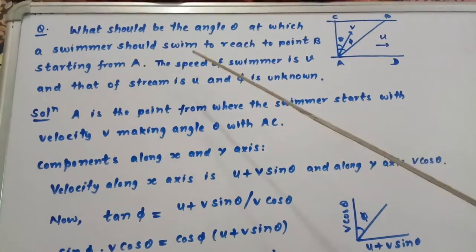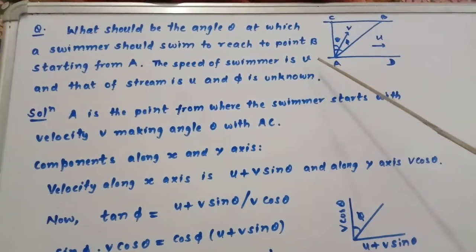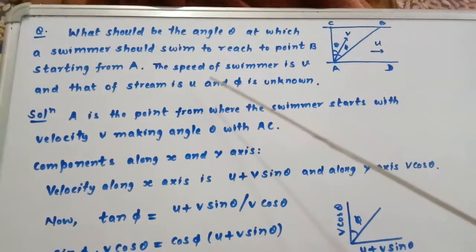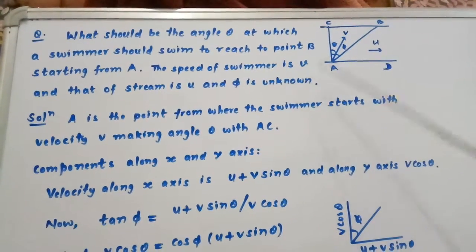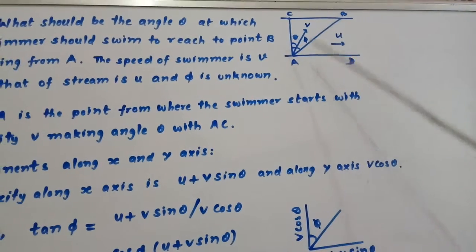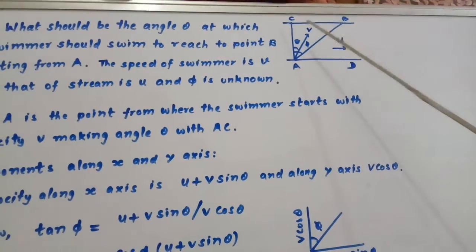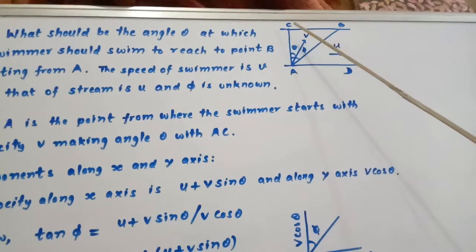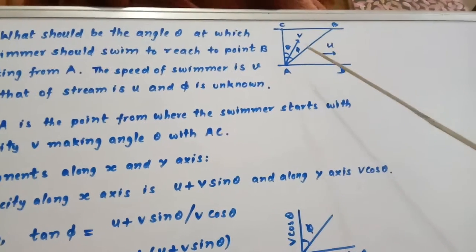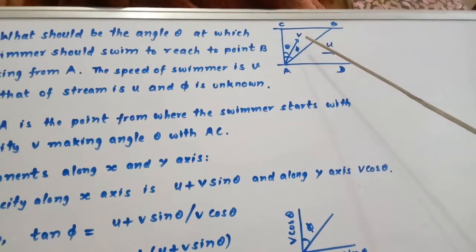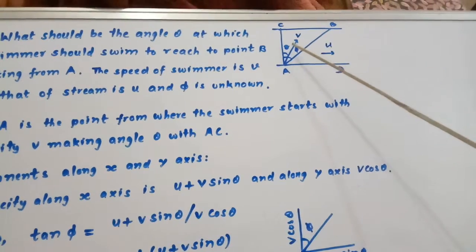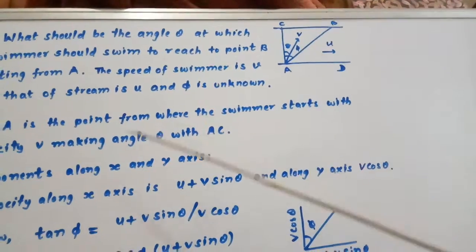Starting from A, the speed of swimmer is V and that of stream is U, and phi is unknown. The figure shows the swimmer starting from A and needing to reach point B, which is directly opposite on the other bank. The swimmer starts in this direction, making angle theta with the bank, and this angle is phi.